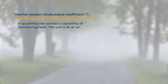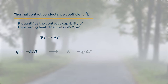Its metric units are Watts per Kelvin per meter squared. If we write Fourier's law for the contact surfaces, we can see that the temperature gradient becomes a temperature difference, as there is no thickness involved. Thus, the thermal conductivity becomes the negative of the heat flux divided by the temperature difference, and is referred to as thermal contact conductance.